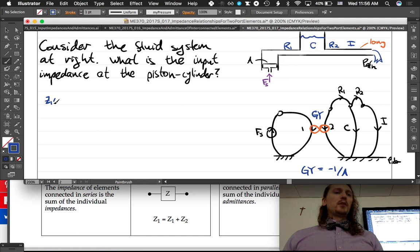So what is z1? That's really what our question is: what is z1, which is the impedance at this left side of the gyrator?